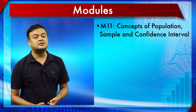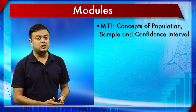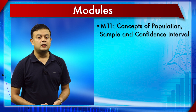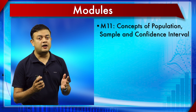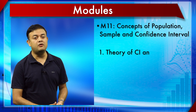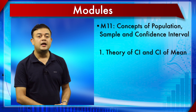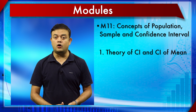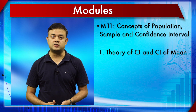The eleventh module covers the concepts of population, sample, and the confidence interval. This module has been divided into two sections. In section number 1 we are going to learn about the theory of confidence intervals and how to calculate the confidence interval of the mean — specifically the 95% CI of the mean.